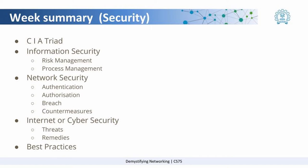Then we looked at what information security is. In information security we saw certain risk management procedures and how we can have processes to manage security. Then we looked at network security, where we saw authentication and authorization — authentication means you are able to tell your network that you are the person who is entering, and authorization means that you have the right of entering a particular system. Then we looked at common types of breaches that happen in a network and the countermeasures we can use to avoid these breaches.